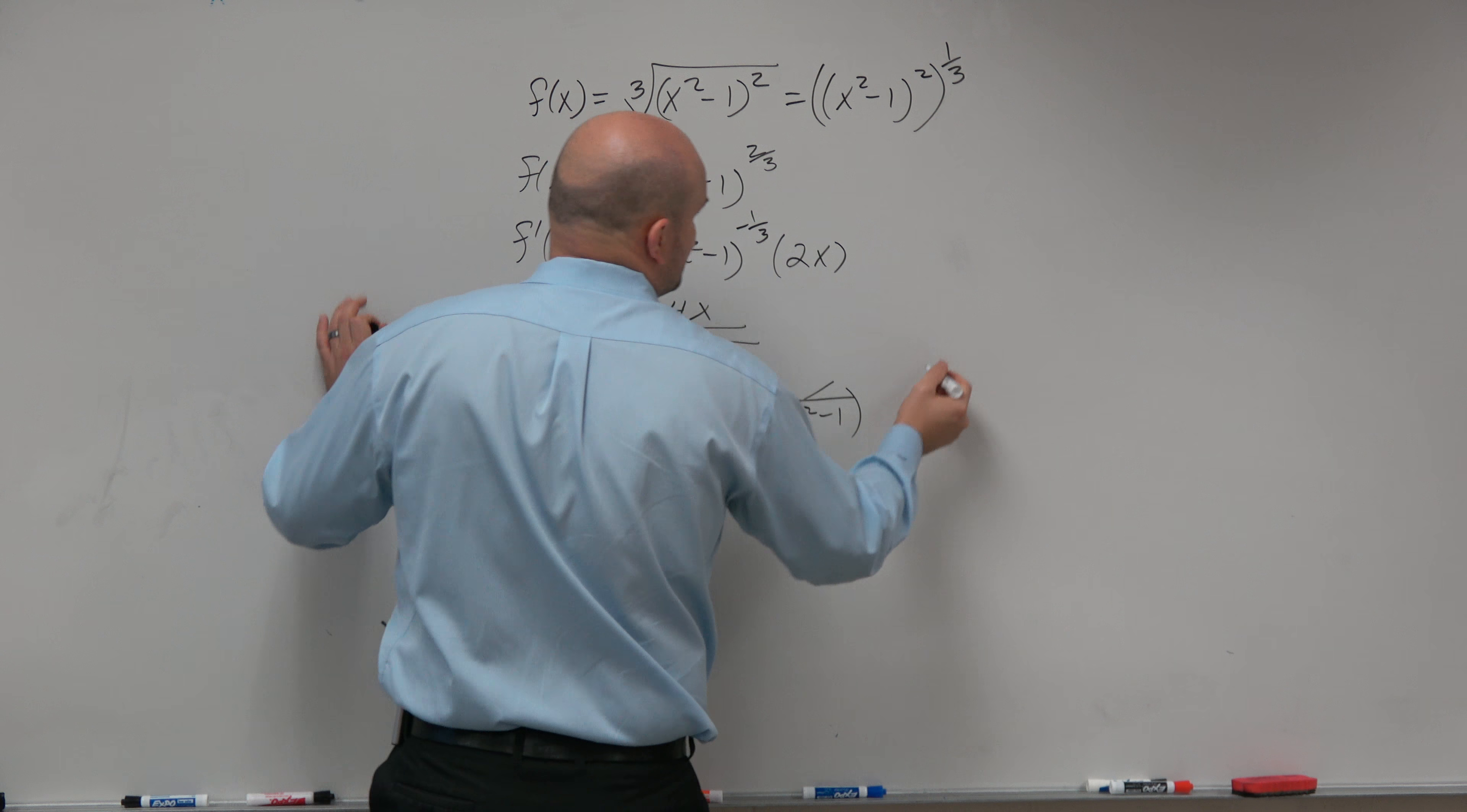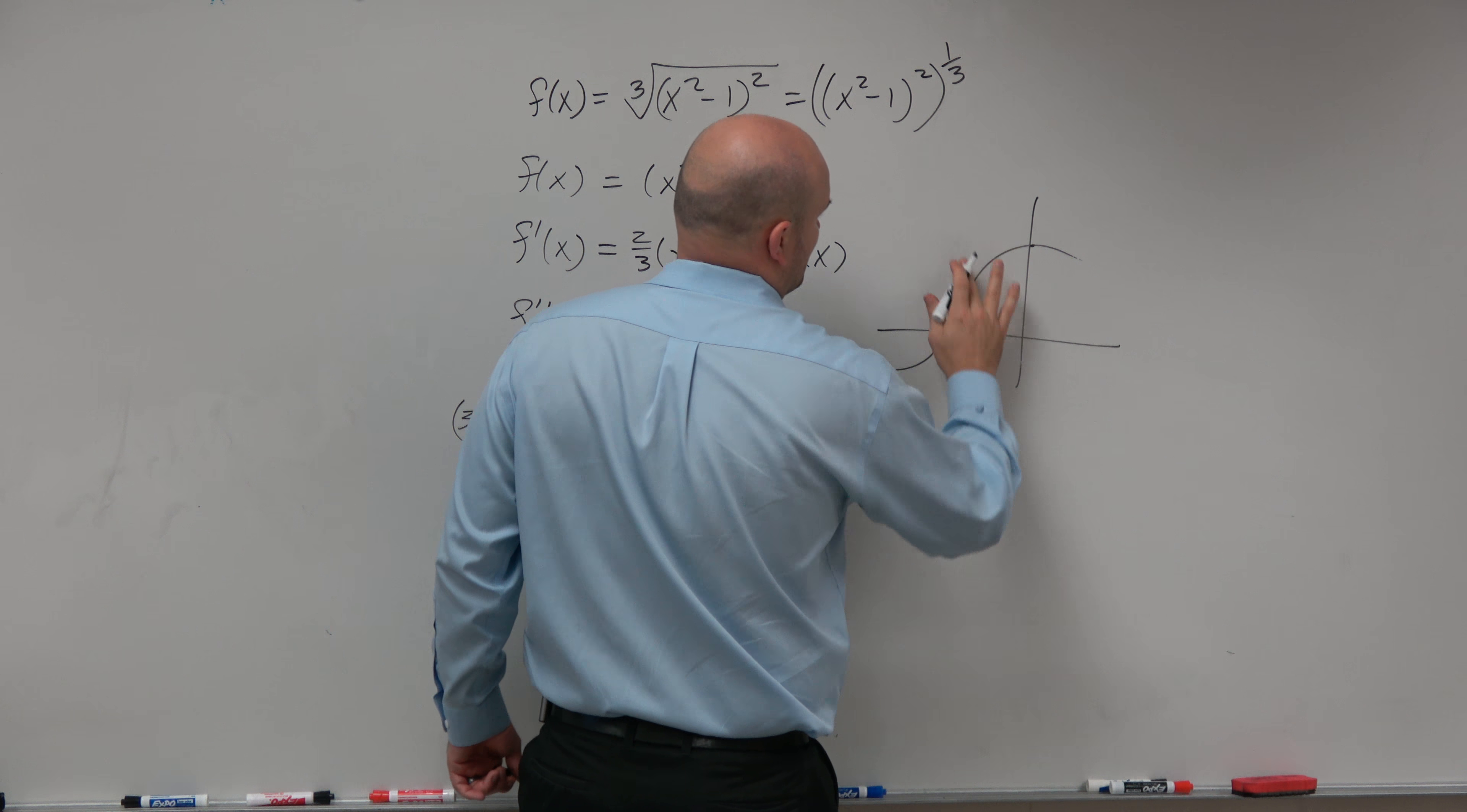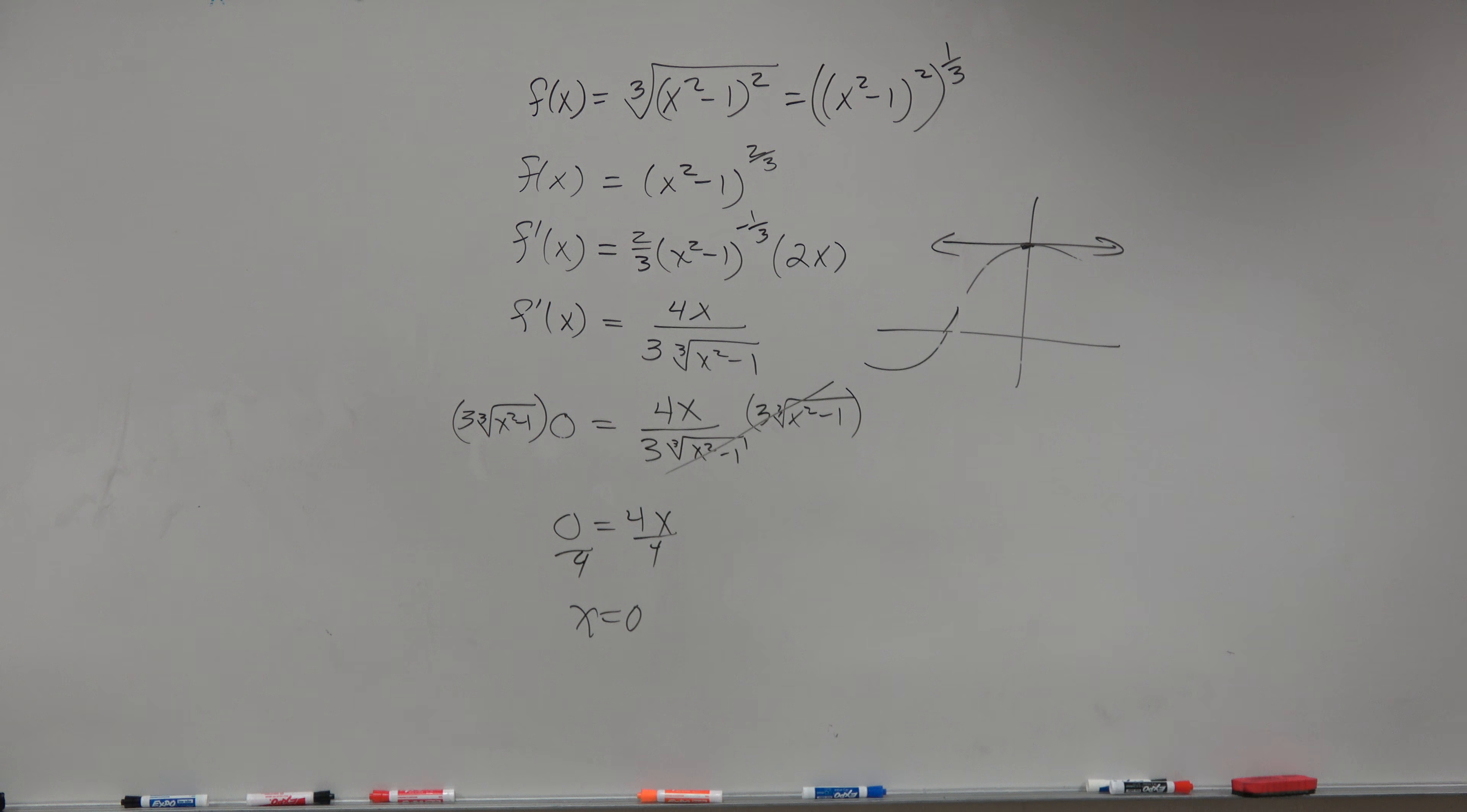So whatever the graph would look like, who knows what this graph looks like. All we know is at x = 0, there is a horizontal tangent. Right? And that's basically what that question is asking and the way we would do it. Now, the next one says, find the vertical.